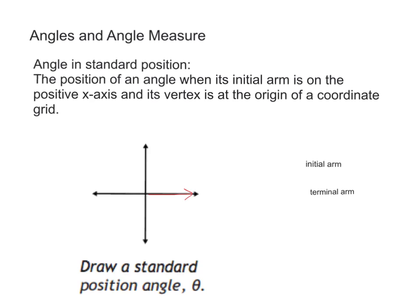Which is like there, see that in red? That's where the initial arm always is for an angle in standard position. So I'm just going to call that initial arm. And then its vertex is at the origin of a coordinate grid.